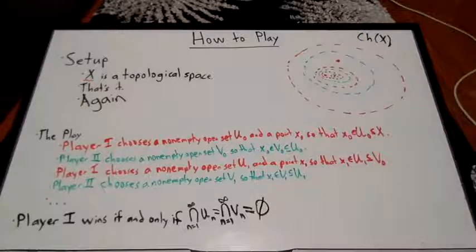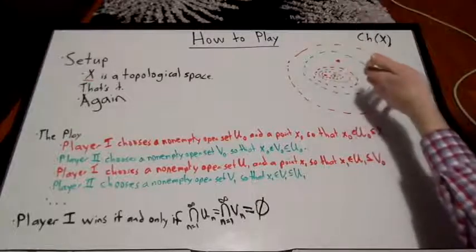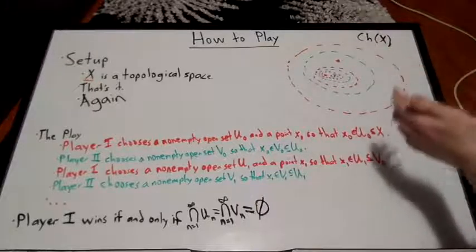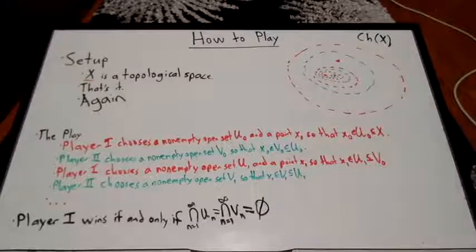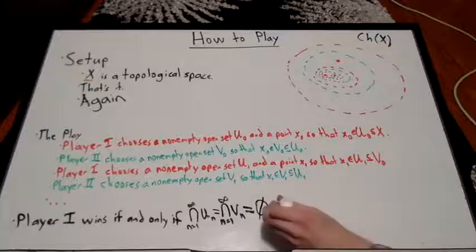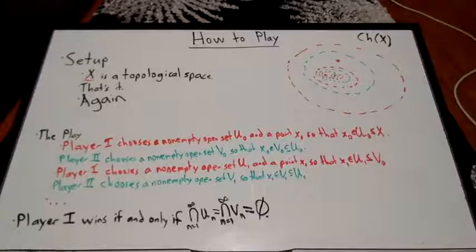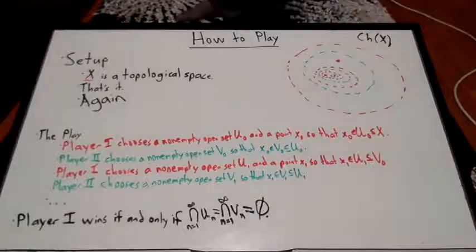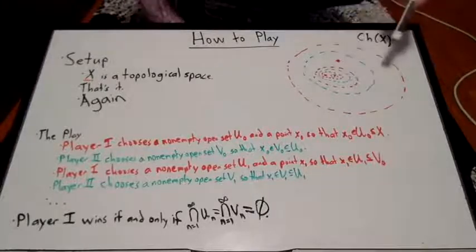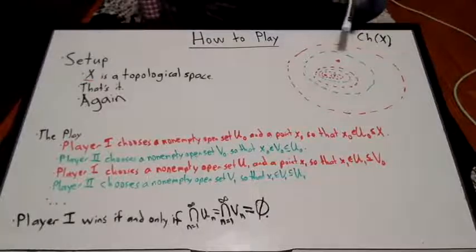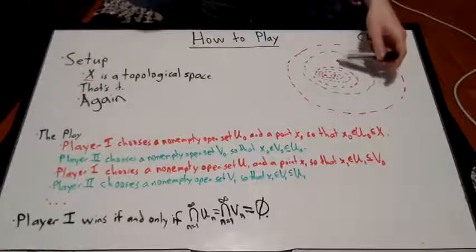And the win condition is the same as in the previous modified Banach-Mazur game. The intersection of all these sets, or equivalently the intersection of all of a particular player's sets, has to be empty. So you can kind of think about this game as a version of the modified Banach-Mazur game where player 1 has more power.